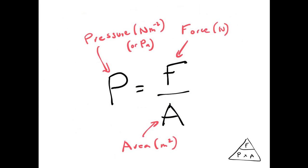This is the equation that you need to be aware of to calculate pressure if you know a force and an area. So pressure in newtons per meter squared, or pascals, is equal to force divided by the area. And I've put the little triangle, the force, pressure, area triangle, in the corner here as well.